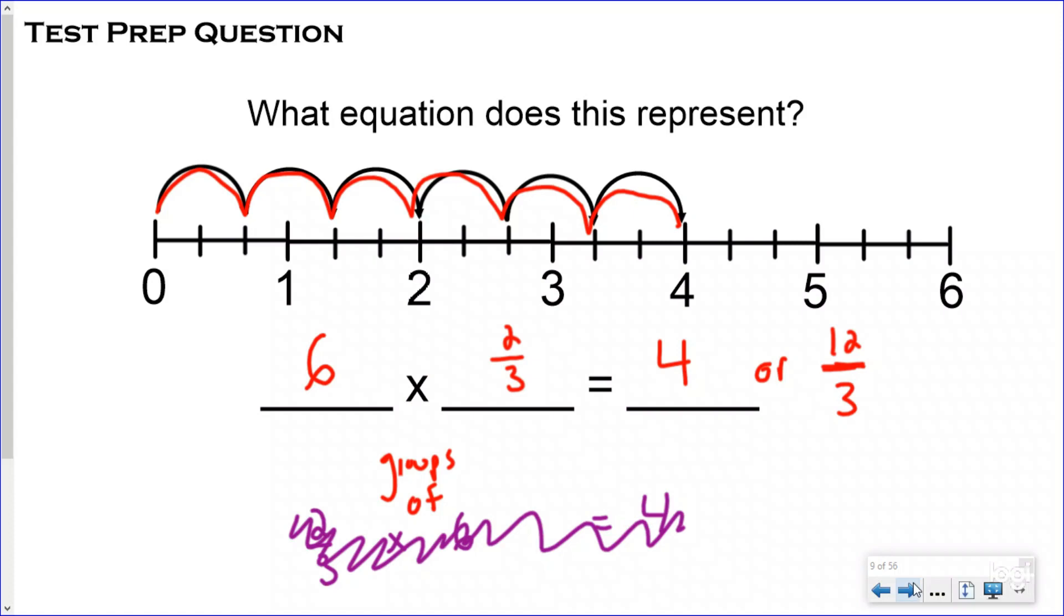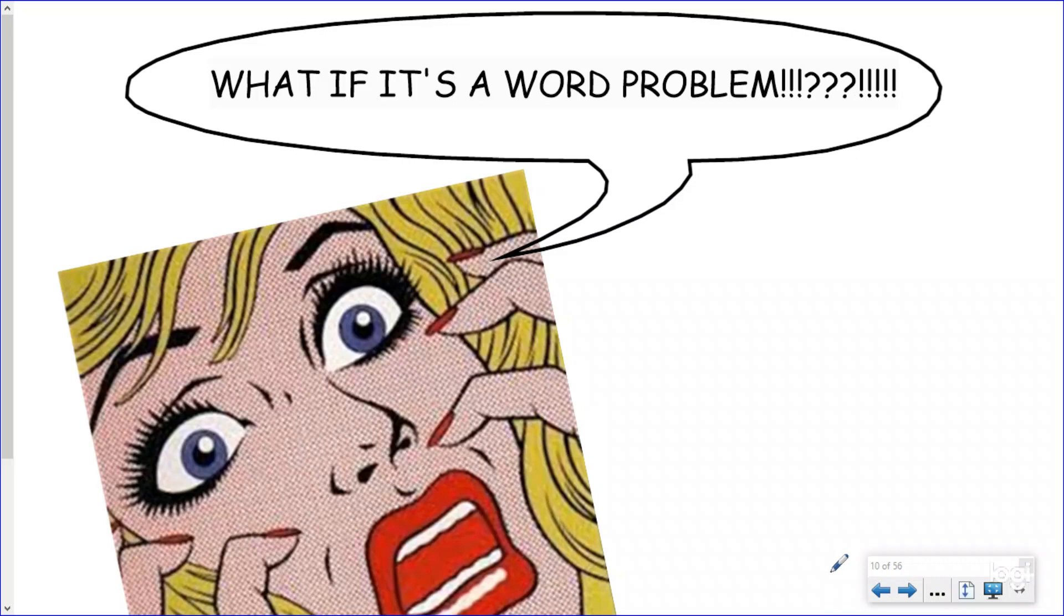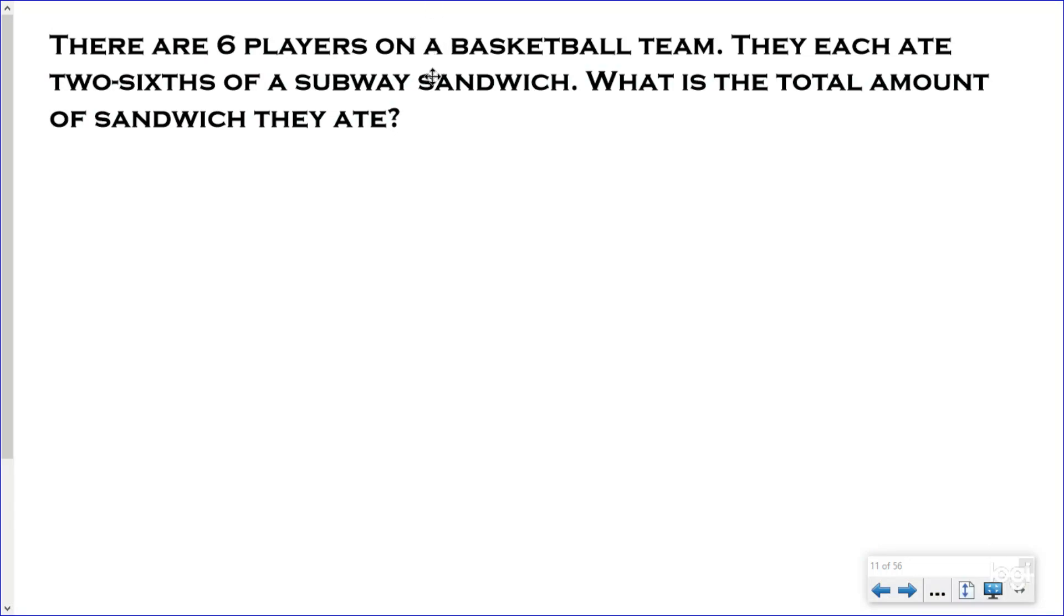So some of you are asking a very important question right now. Dr. Bones, what if it's a word problem, Dr. Bones? And that is a great question. So let's take a look at one word problem together before we are done with our lesson. Our word problem says there are six players on a basketball team. That's a small basketball team. They each ate 2/6 of a Subway sandwich. What is the total amount of sandwich that they ate? We are going to continue to use our SIDES CHECK word problem strategy. If you don't know it, please check out our InstructorBeats song on our word problem strategy. It is a fantastic song, if Dr. Bones does not say.